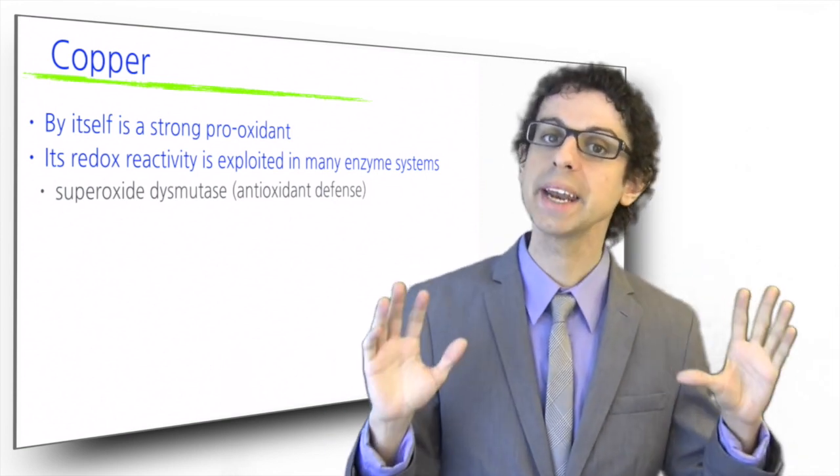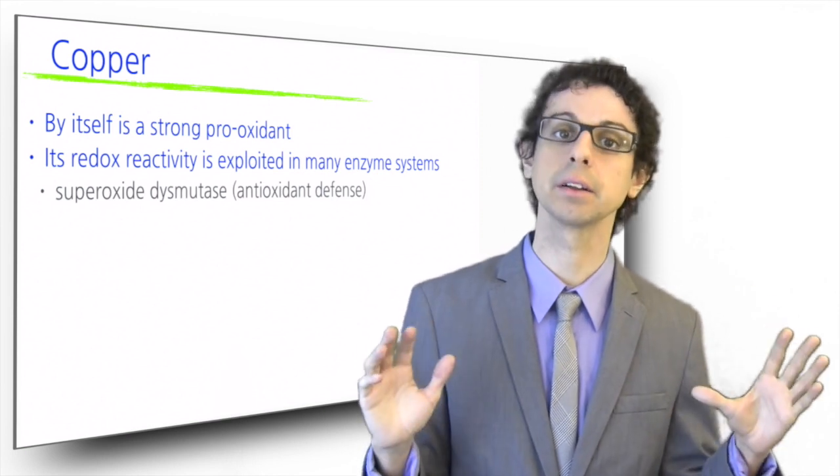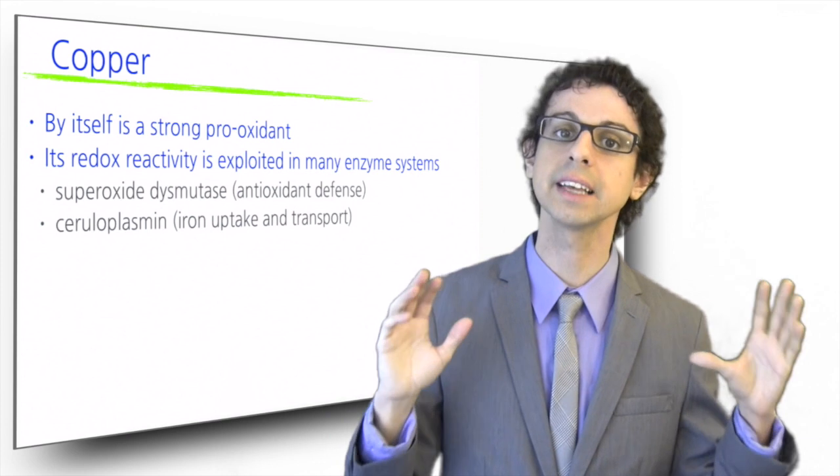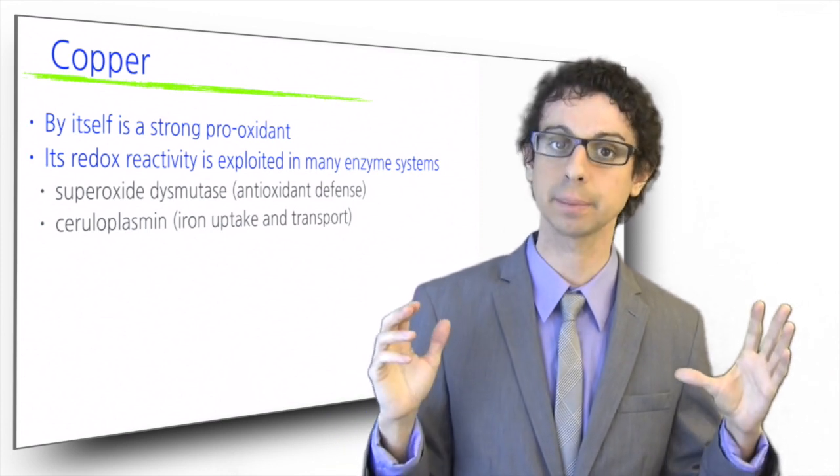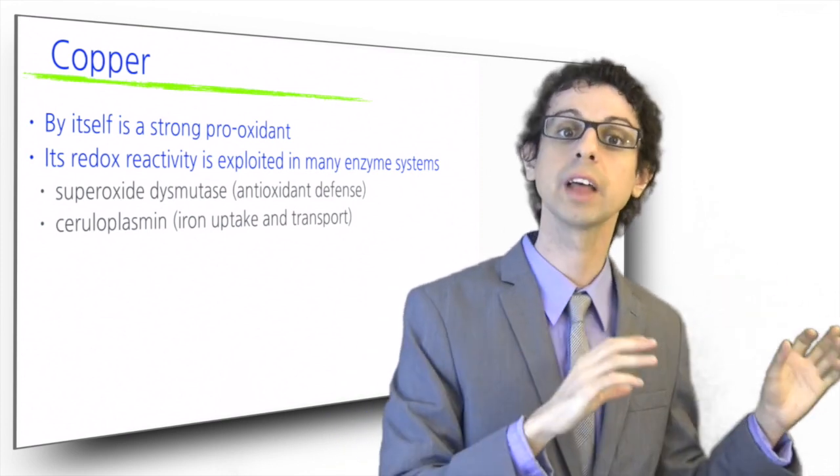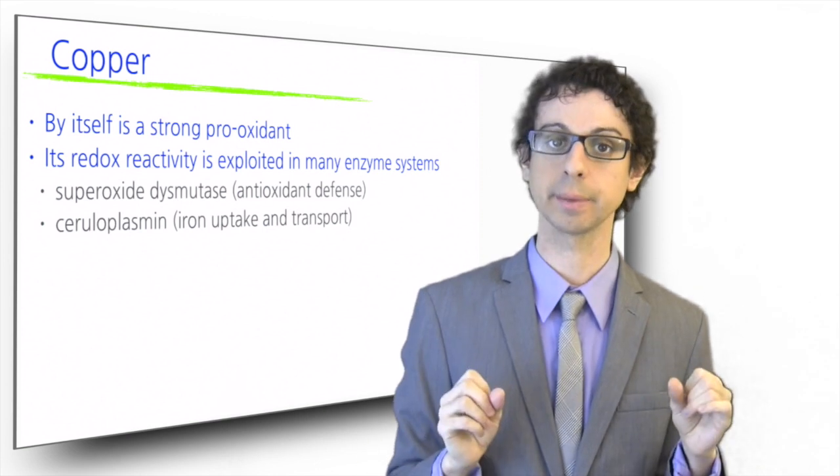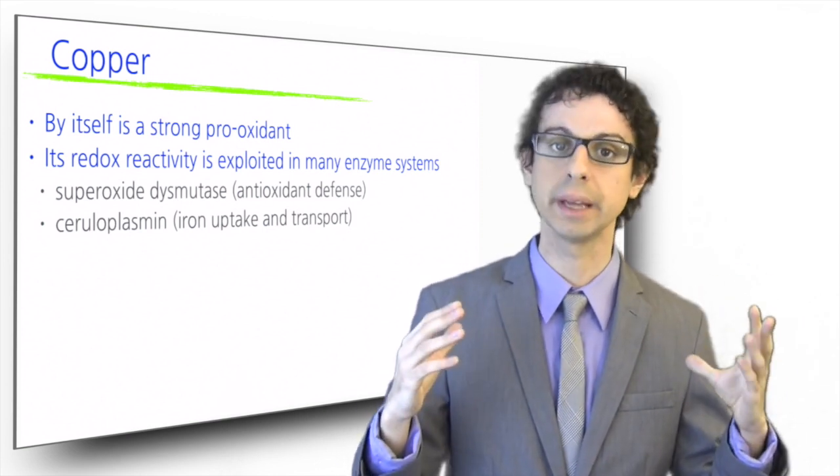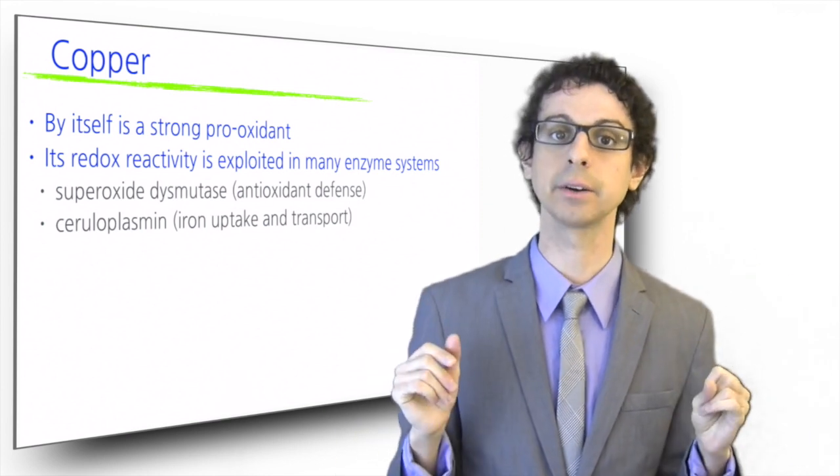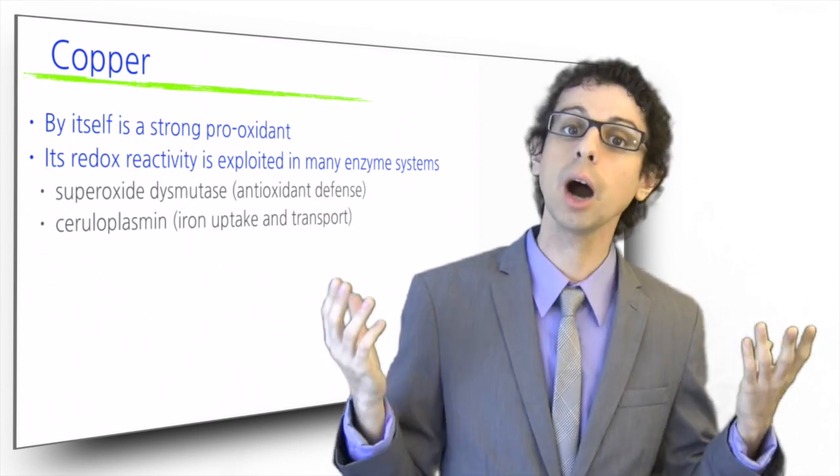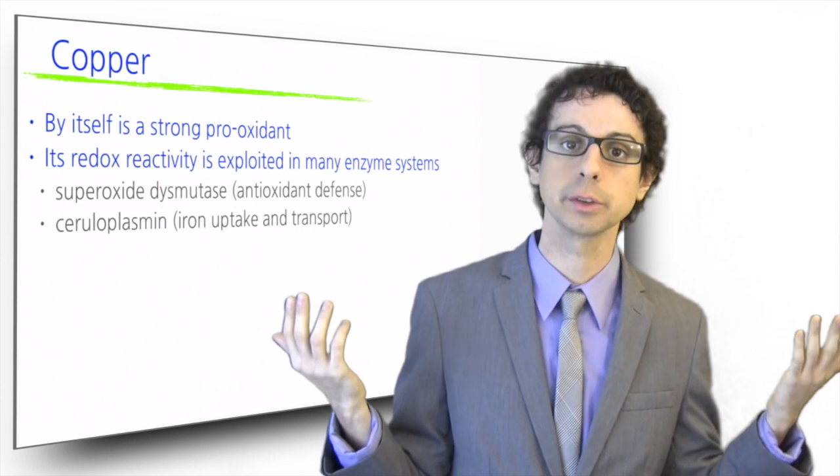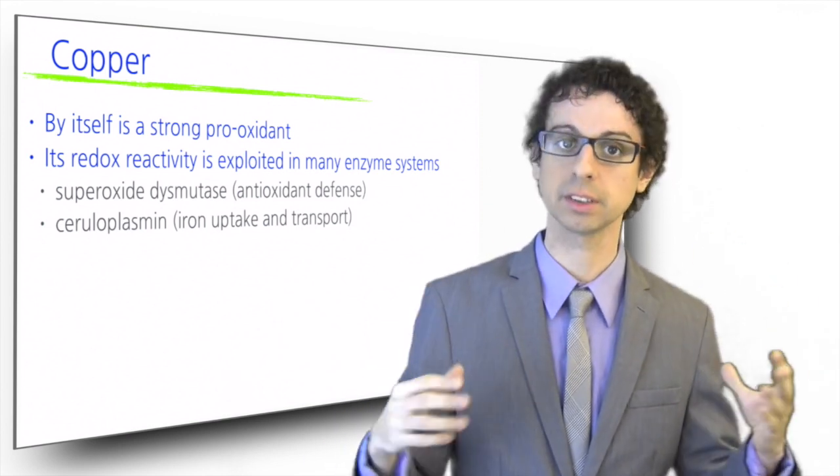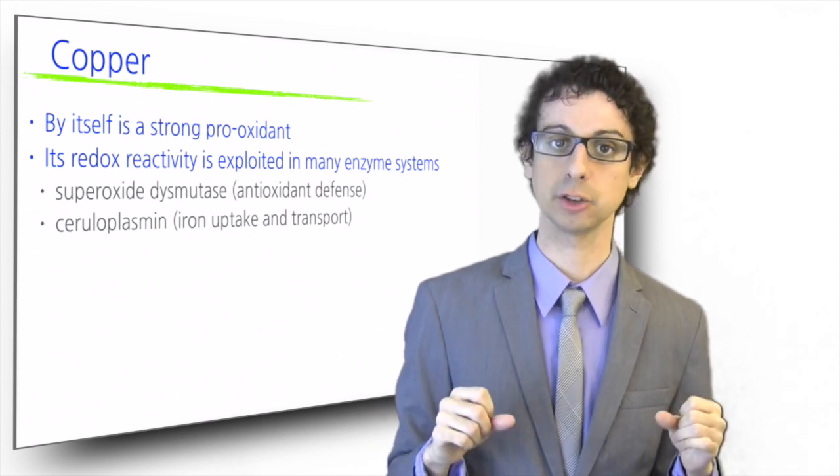Copper is required by many other enzymes that are critical to our metabolism. As part of ceruloplasmin, copper is essential for intestinal iron uptake and incorporation into the iron carrier transferrin. For this reason, copper deficiency can lead to anemia even if dietary iron is adequate, because without copper, iron cannot be used. Even worse, it will instead build up in tissues such as liver, promoting oxidative damage.